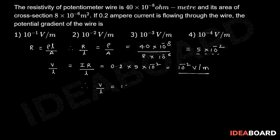So V by L is equal to 10 power minus 2 volt per meter. Second option is the right option.